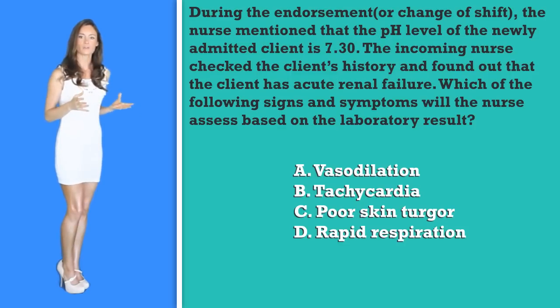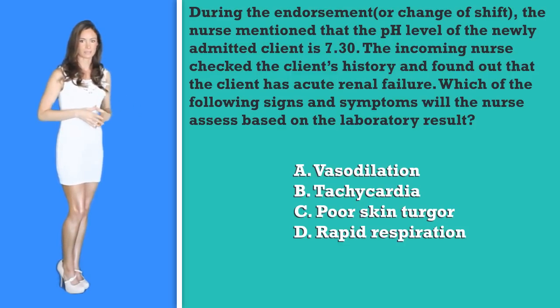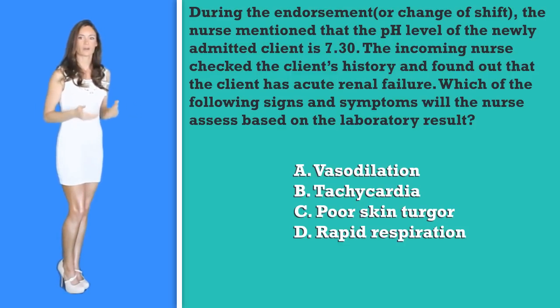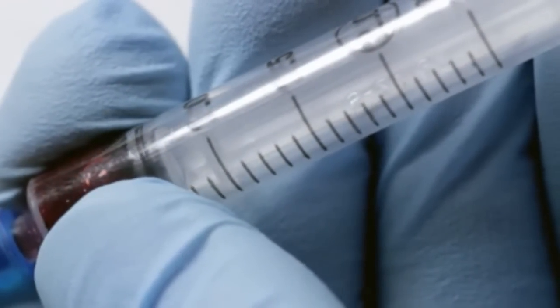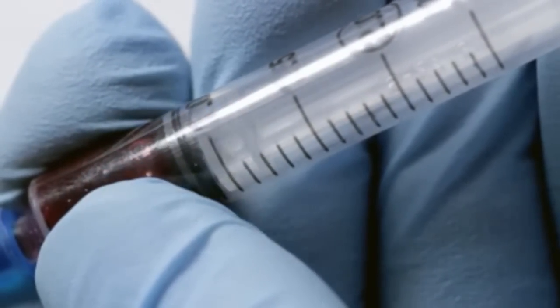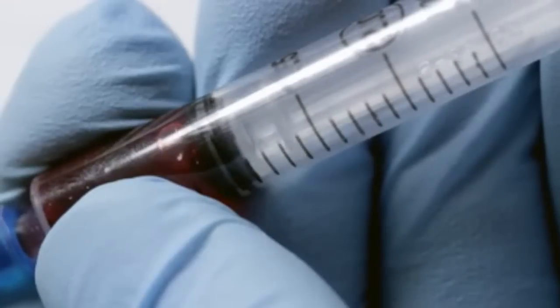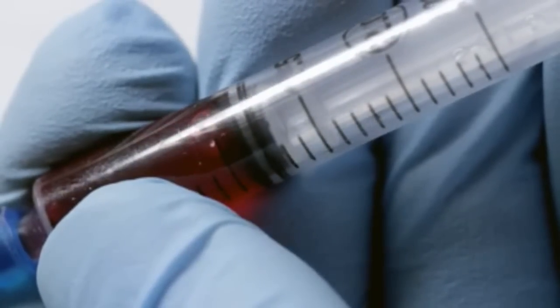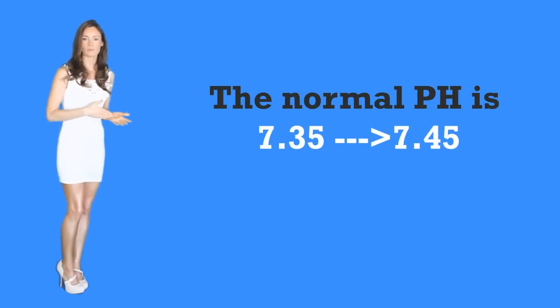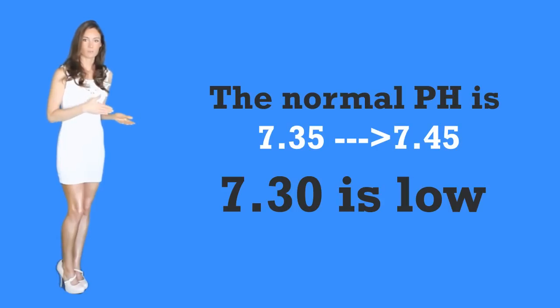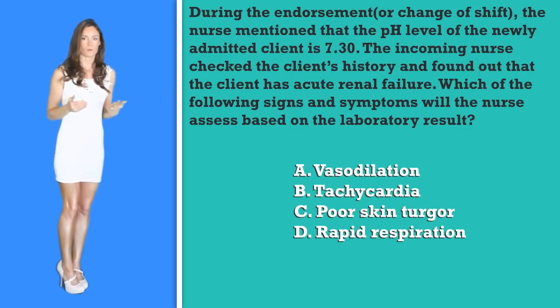To answer this question, you first need to understand what ABG means. ABG stands for arterial blood gas, which measures whether your patient has a balanced pH state. This balance is important — too much acidity or too much base will cause major harm in the human body. The normal pH is 7.35 to 7.45, so a reading of 7.3 is low. Even slightly low values matter when considering arterial blood gas.